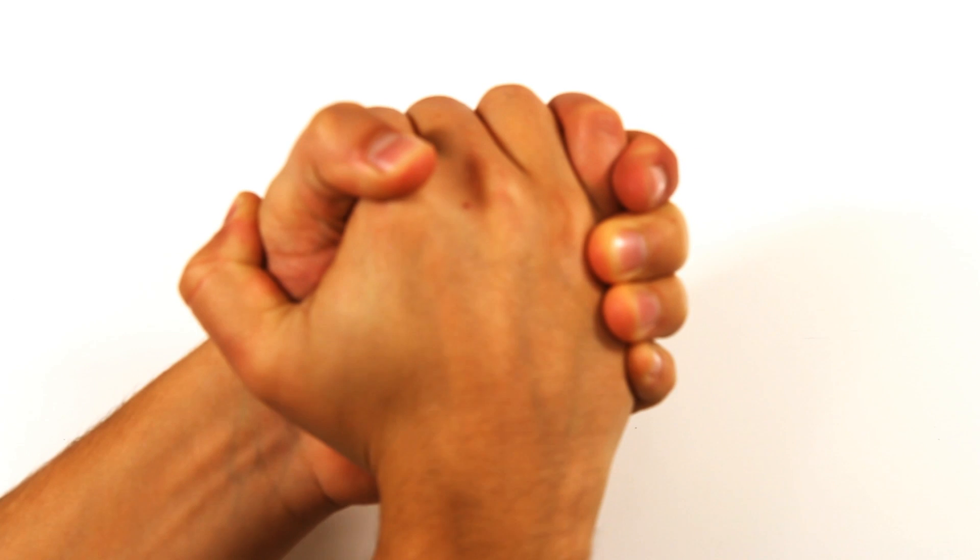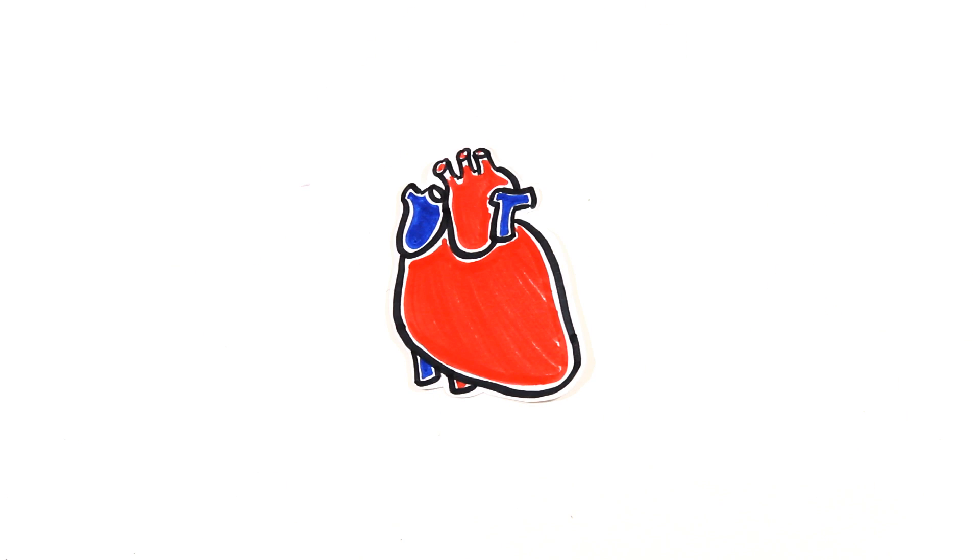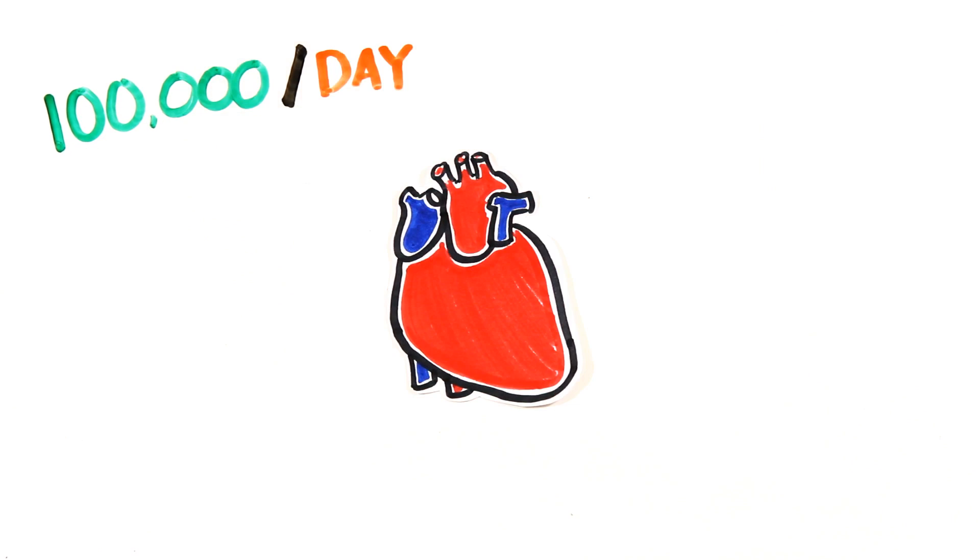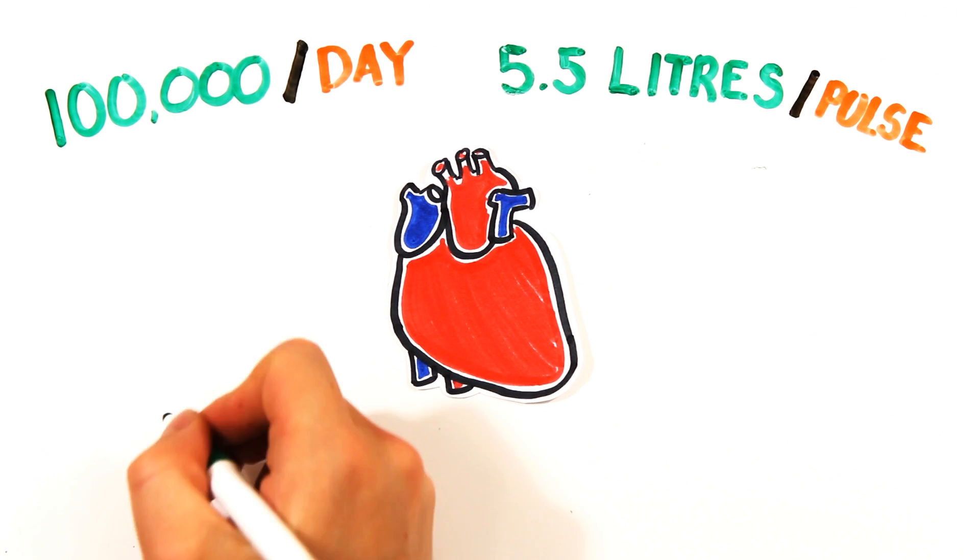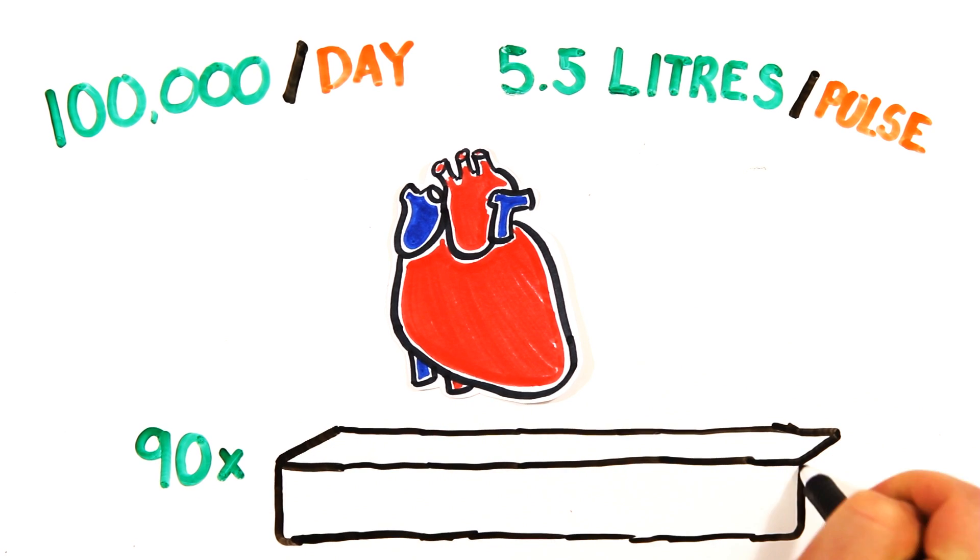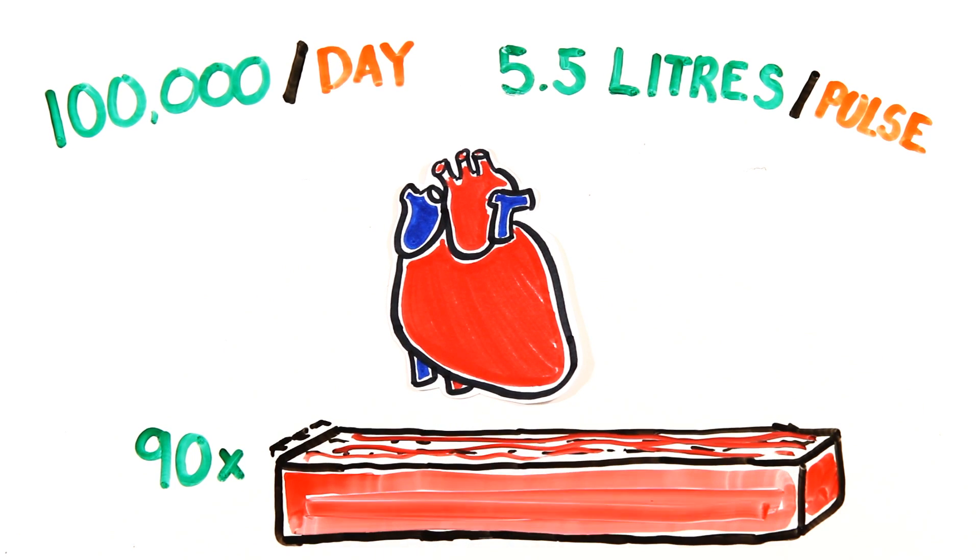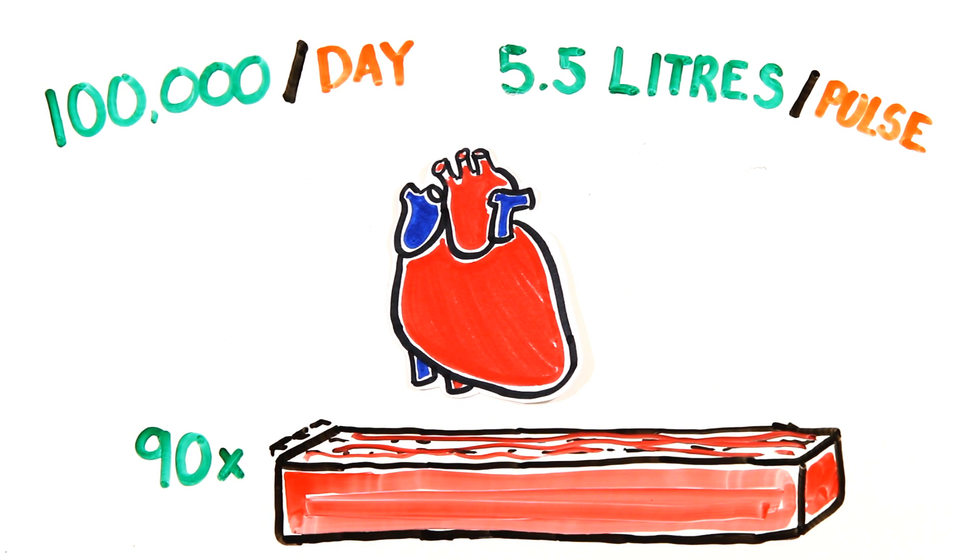Now, clasp one hand into the other. That's roughly the size of your heart. It beats 100,000 times per day, pumping 5.5 liters with each pulse, which is close to 3 million liters of blood every year. If you lived to 75, it would fill 90 Olympic-sized swimming pools.